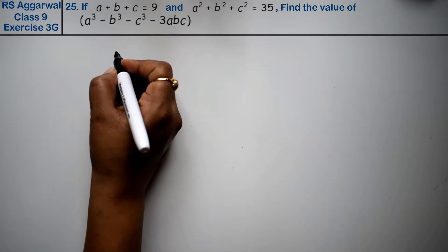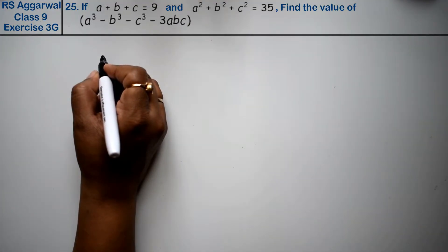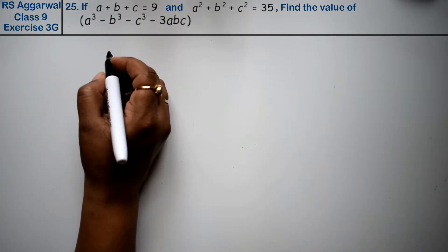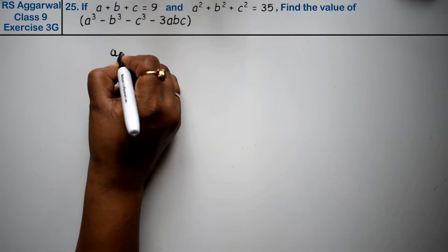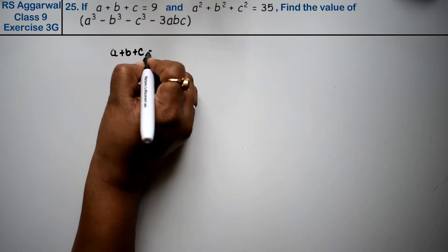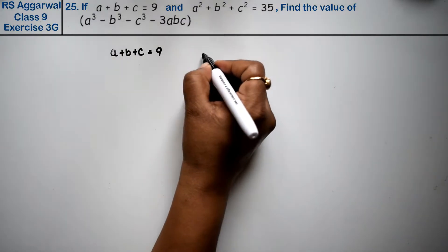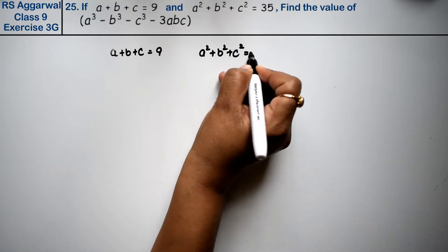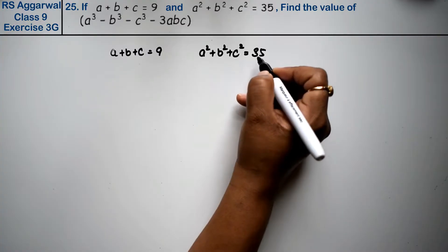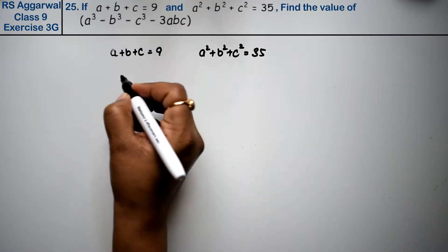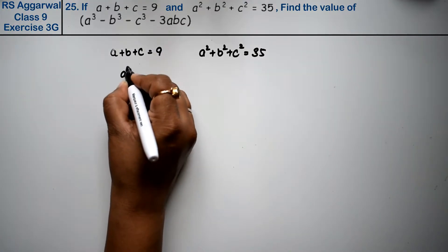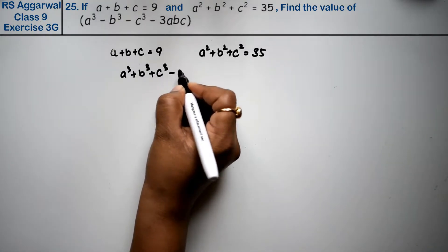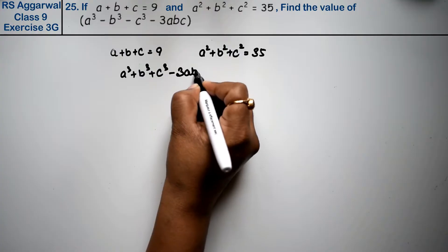Let's do question number 25 of exercise 3G, factorization of polynomial. The question is: if a plus b plus c equals 9 and a squared plus b squared plus c squared equals 35, we have given two values. We have to find the value of a cubed plus b cubed plus c cubed minus 3abc.